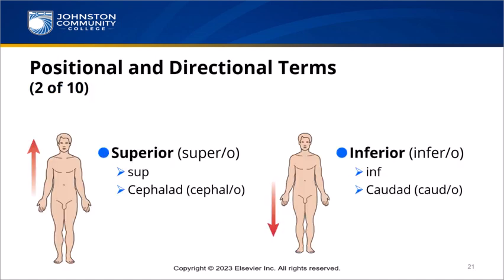Superior means pertaining to upward — supero is the combining form, abbreviated sup. Cephalad means towards the head — cephalo is a combining form meaning the head, and the suffix ad means towards. Inferior means pertaining to downward — infero is the combining form, abbreviated inf. Caudad means towards the tail — caudo is the combining form for the tail. Up and down are even harder to discern on animals, so it's either towards the head or towards the tail.